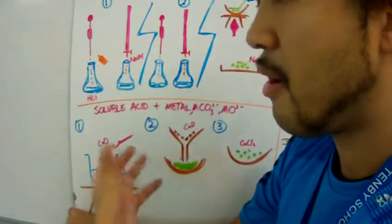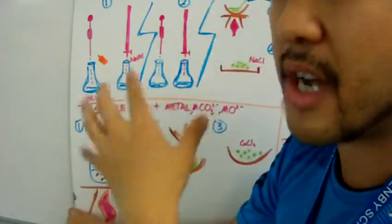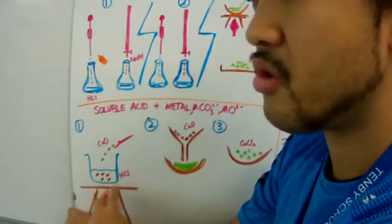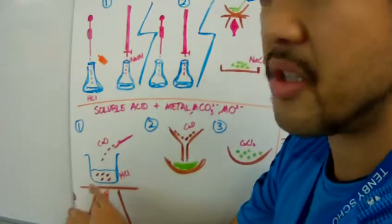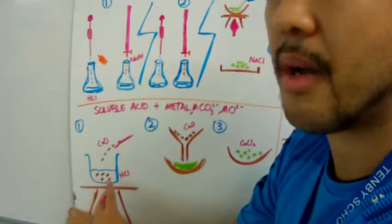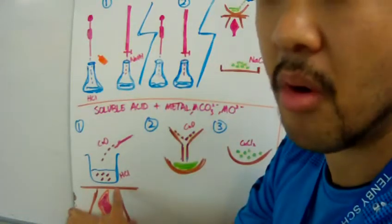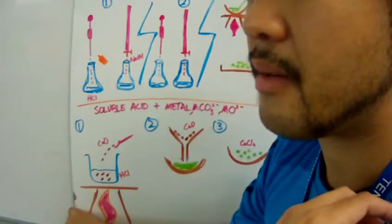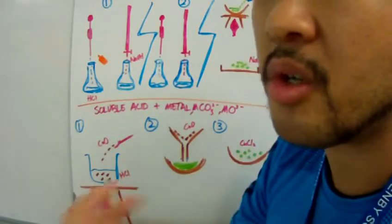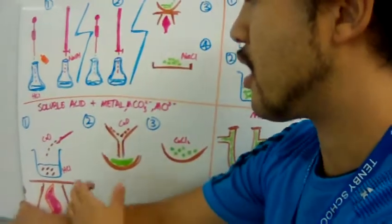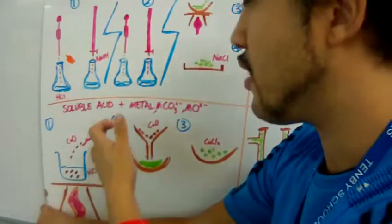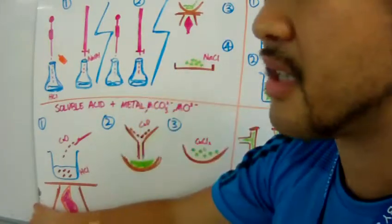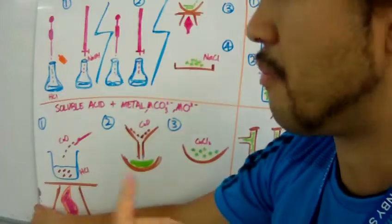Once you notice that your metal carbonate or metal oxide is not reacting anymore with the acid, that means the acid has been completely neutralized into becoming a salt. If those metal carbonates or metal oxides are solids, then you're going to see murkiness or precipitate in the beaker.